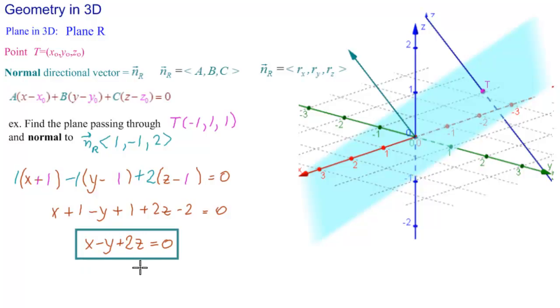Notice that 0, 0, 0 satisfies this equation. So the point 0, 0, 0 should be on the plane. And indeed it looks like it is on the plane. And the point T should be on the plane. So let's see. Minus 1, minus 1, that's minus 2, plus 2 is 0. So T is on the plane. And all of the points between 0, 0, 0 and T are on the plane. In fact, there are infinitely many points this way and infinitely many points that way. So one could say that there's infinity squared points on this plane.